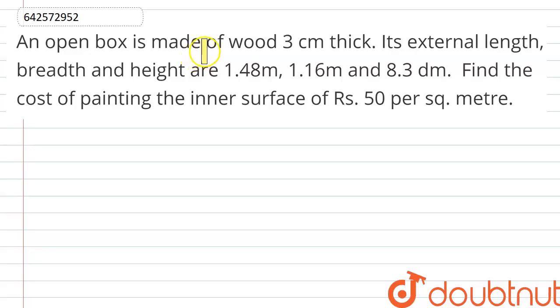Hello everyone, the question is an open box is made of wood 3 cm thick. Its external length, breadth and height are 1.48 meters, 1.16 meters and 8.3 decimeters. So we have to find the cost of painting the inner surface at rupees 50 per square meter.